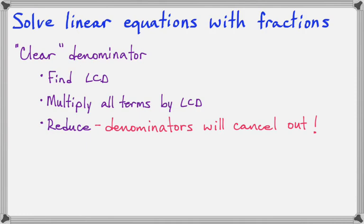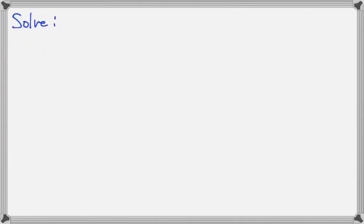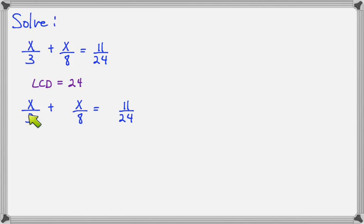Let's see what we're talking about here with our first example. Let's solve x over 3 plus x over 8 equals 11 over 24. For this example, our common denominator for all three of these would be 24, because that's the smallest number that 3 and 8 and 24 can all three go into. So what we would do then is multiply every term by 24.